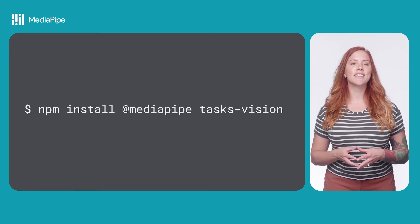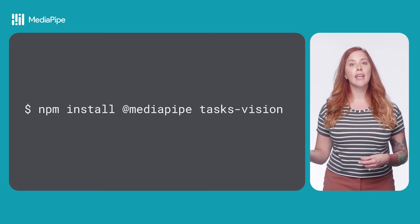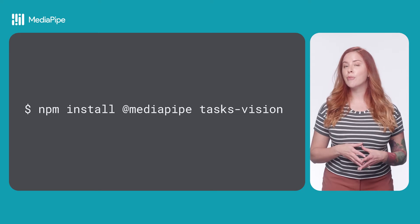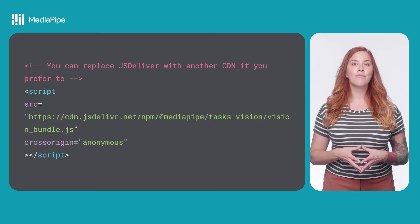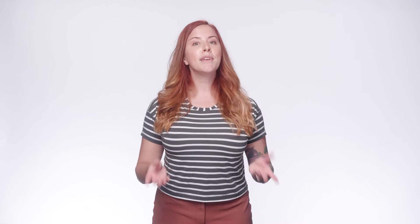Start by installing the TasksVision package. You can download the package using NPM and use a JavaScript compilation tool like Webpack, or you can import the package using a CDN. MediaPipe for the web uses WebAssembly, or WASM, a binary instruction format for a stack-based VM. You don't need to understand WASM to use MediaPipe solutions for the web — just know that WASM allows non-web-based code to run on the web.